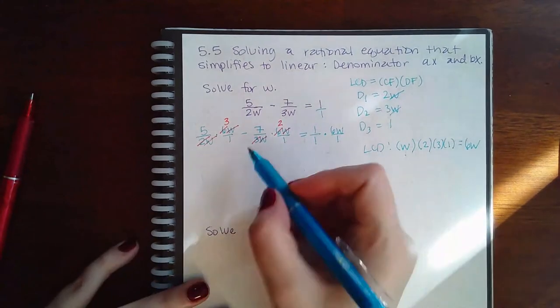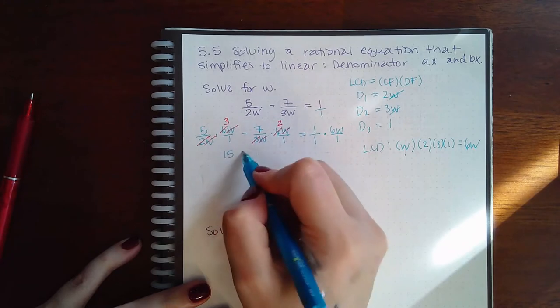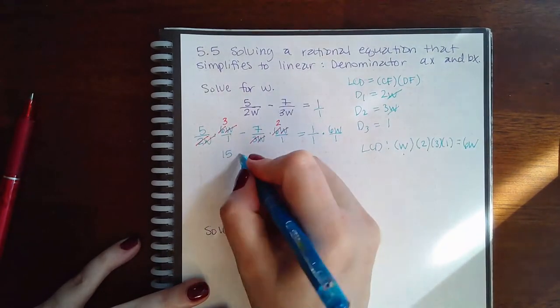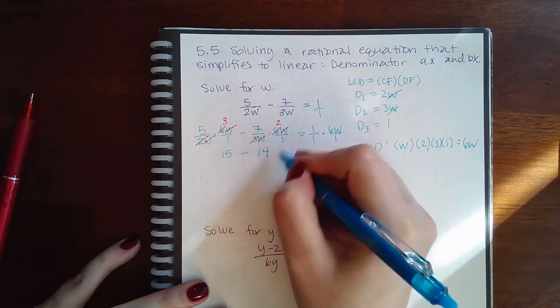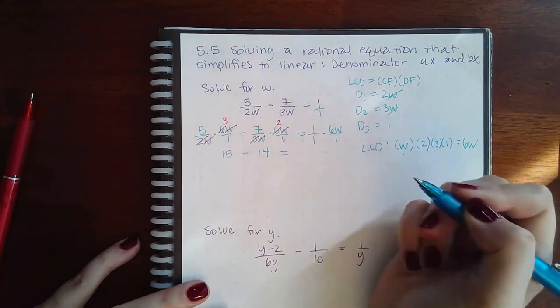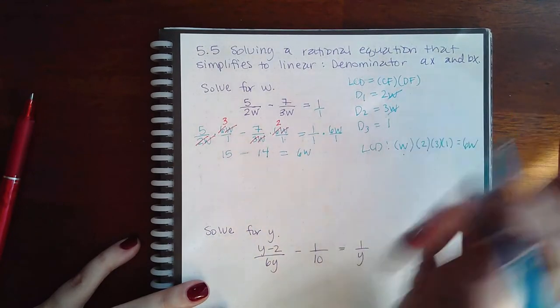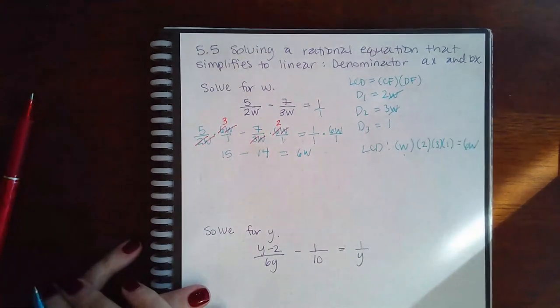What am I left with? 5 times 3 on the top, and then a 1 at the bottom, so I don't need to write that. That's a whole number. Here I end up with 7 times 2, which is 14 on the top, and a 1 at the bottom. I don't need to write. Here I end up with 6W over 1. Again, don't need to write the denominator 1.